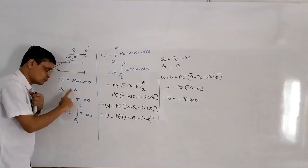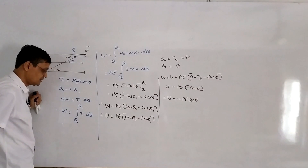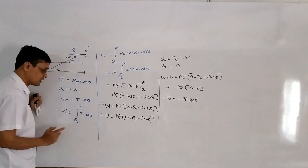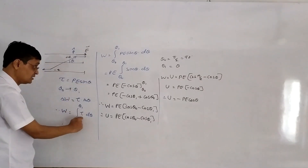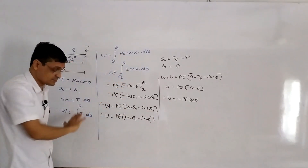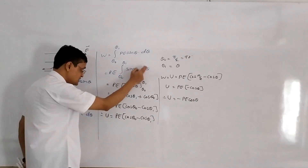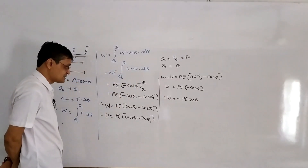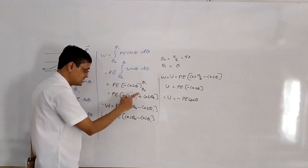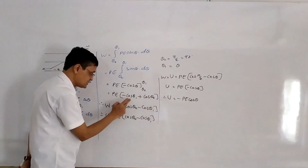Starting from initial angle theta₀, we bring the dipole to theta₁. For a small displacement, delta W = T × delta theta. Total work equals integration from theta₀ to theta₁ of T d theta. Substituting T = PE sin theta, and taking PE constant outside, work equals PE [minus cos theta] from theta₀ to theta₁, giving W = PE (cos theta₀ minus cos theta₁).